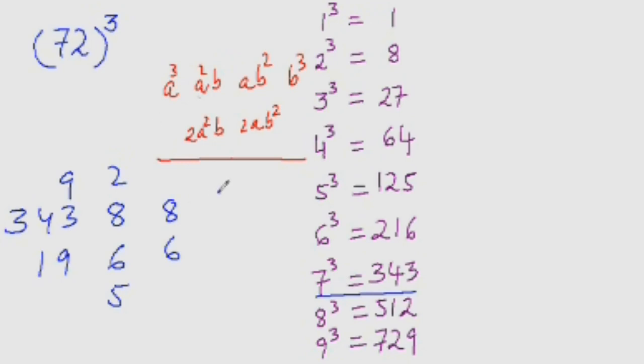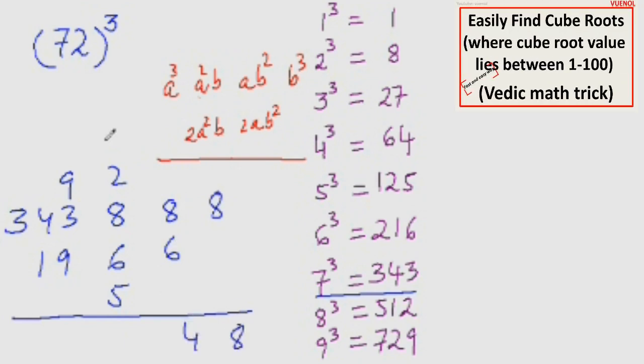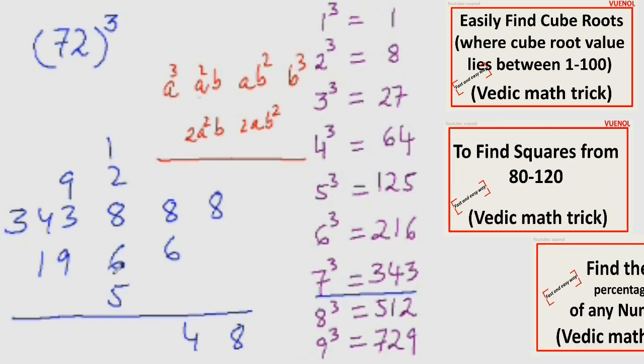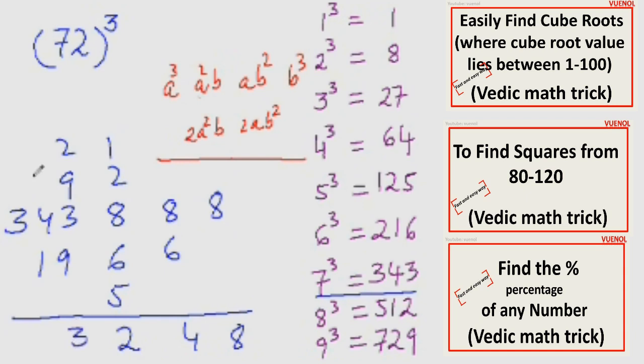Now just add these digits. It would be 8, 8 plus 6 is 14 and carry forward 1, this would be 3, 11, 17, and 22. Carry forward 2 here, this would be 11, 11 plus 3 is 14, 14 plus 9 is 23. So write 3 here and carry forward 2, so 34 plus 2 is 36 and 36 plus 1 is 37. So this is your answer, the value of 72 cube: 373,248.